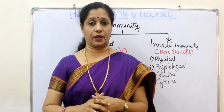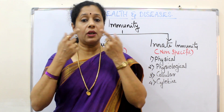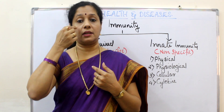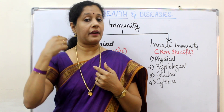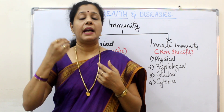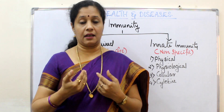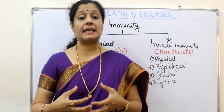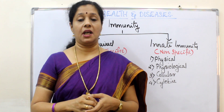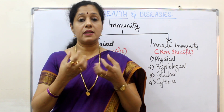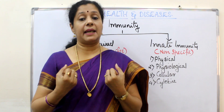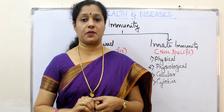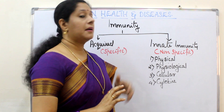The second physical barrier is mucus coating. The openings of our body — especially the gastrointestinal tract, the respiratory tract, or the urogenital tract — everywhere we have mucus lining. The mucus lining has mucosa cells and also some cilia. These mucosa cells will kill the microbes, and cilia will check the entry of microbes. This is called a physical barrier.